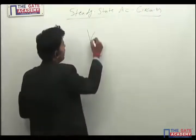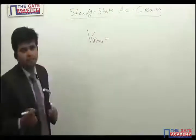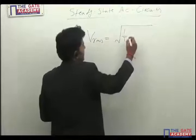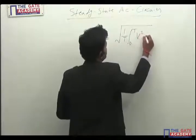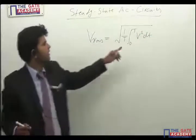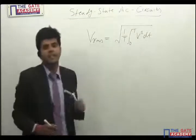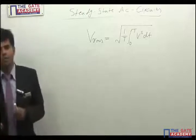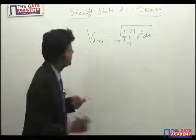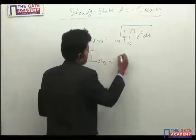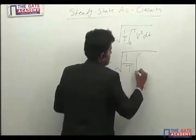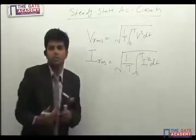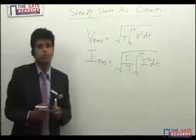The first formula is the RMS value of any sinusoidal signal. V_RMS is defined as the square root of (1/T) times the integral from 0 to T of V² dt, where capital T is the time period of the signal. The similar formula can also be written for the RMS value of a current signal: I_RMS equals the square root of (1/T) times the integral from 0 to T of I² dt. If any arbitrary function is given and you need to calculate the RMS value, you use these formulas.